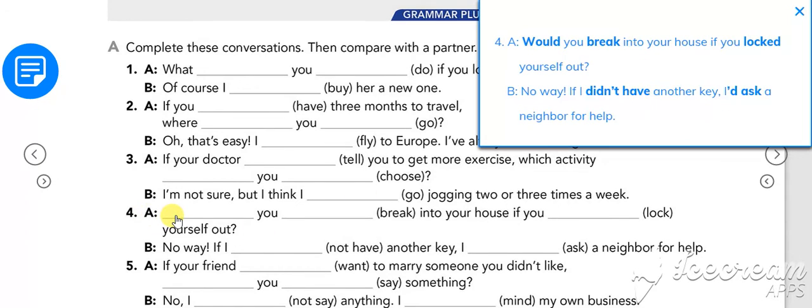Number four: would you break into your house if you locked yourself out? B: no way. If I didn't have another key I'd ask a neighbor for help.